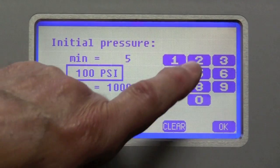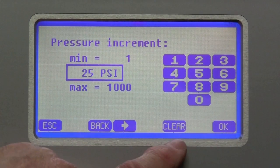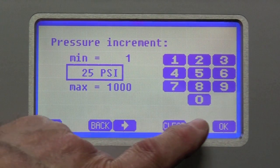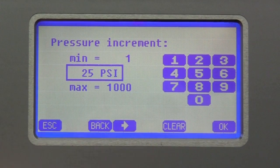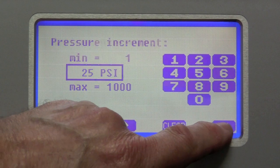The initial pressure, in this case, we're going to make it 25. I'm going to say okay. And I'm going to let it increment up 25. So that means the first step will be 25 and the next step will be 50. So we'll say okay.